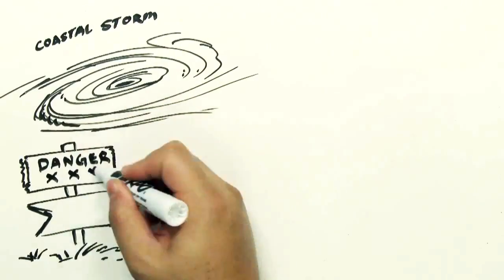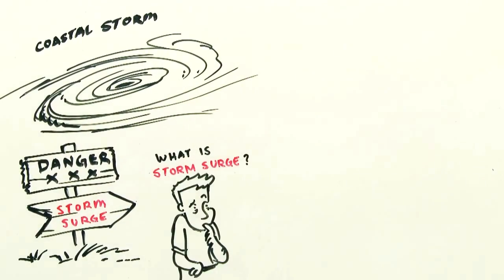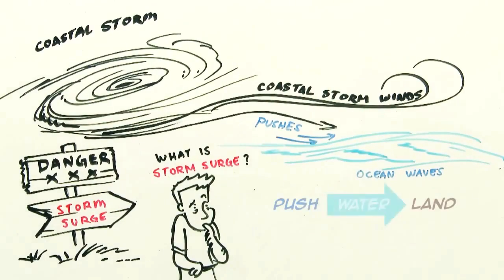One of the most dangerous parts of a hurricane is storm surge. What is storm surge, you ask? Storm surge is what happens when the winds of a coastal storm push water onto land.